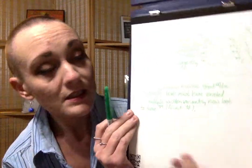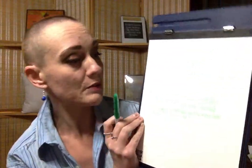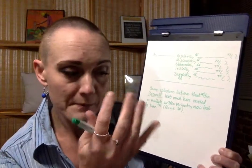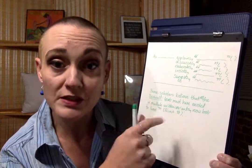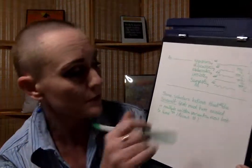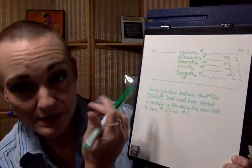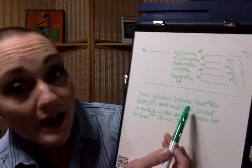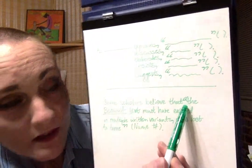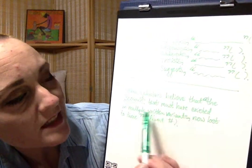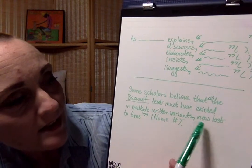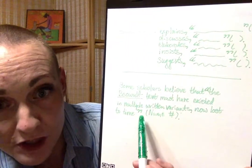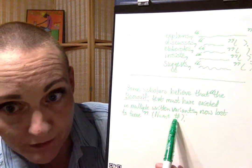Alright, so here's another way to integrate quoted material if you want to make it feel like part of the structure of your own sentence, but still give credit where it's due. So I just made the sentence up, right? Some scholars believe that, quotation marks, the Beowulf text must have existed in multiple written variants, now lost to time, end quotation marks, name, page number. So, Carpenter 27, not the symbol there.